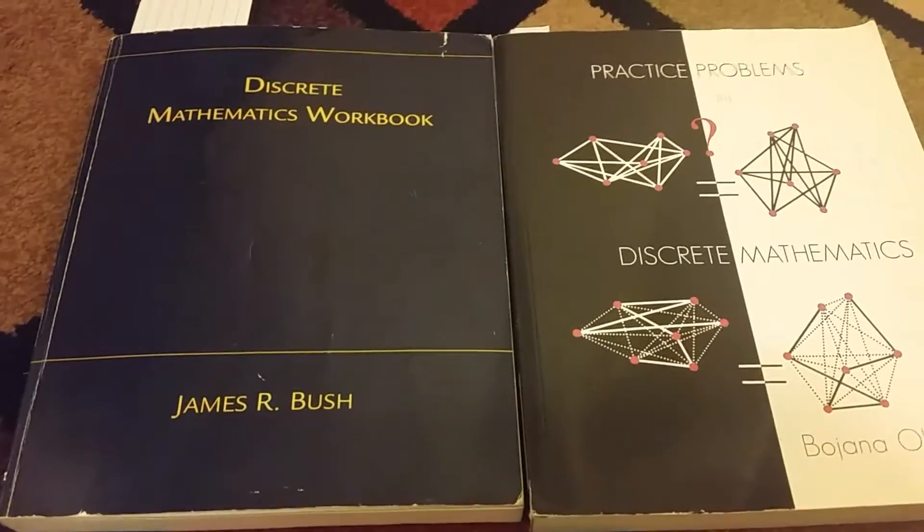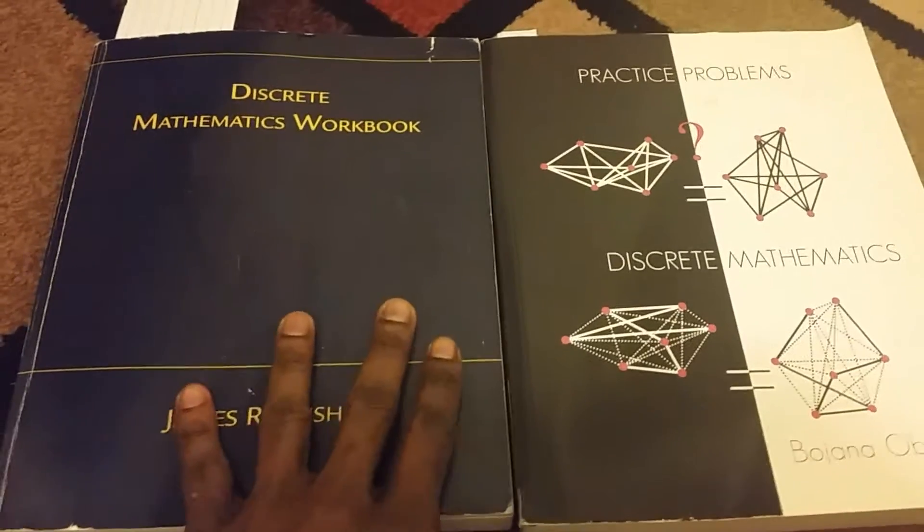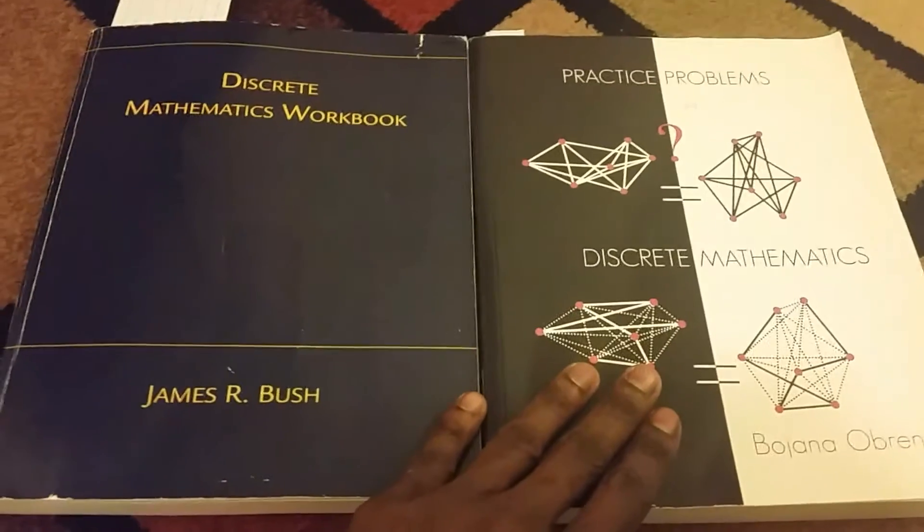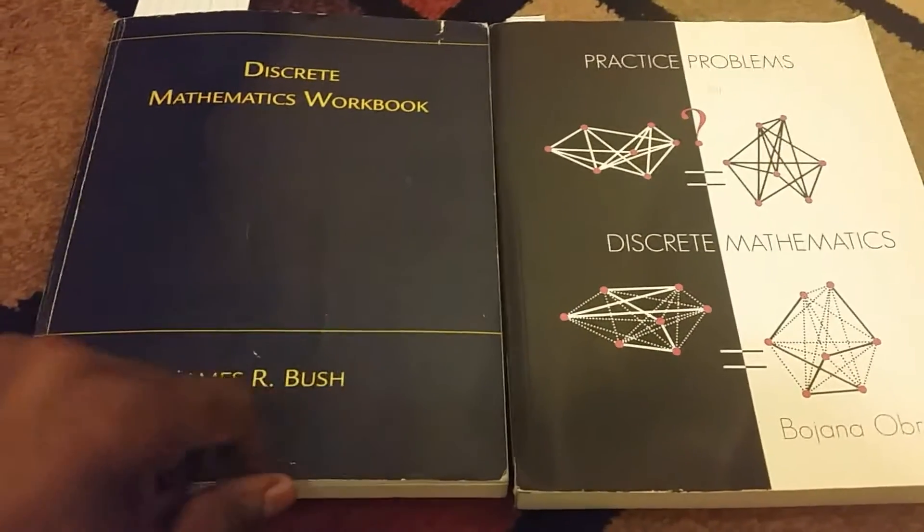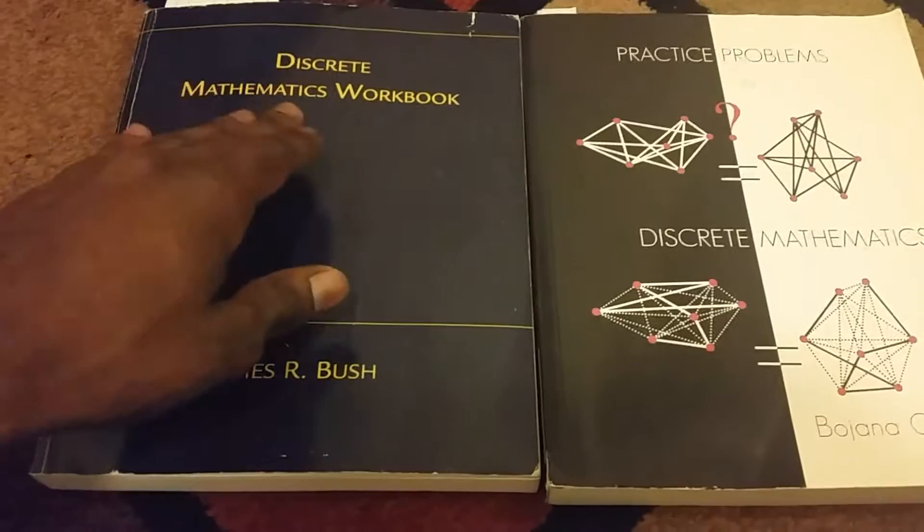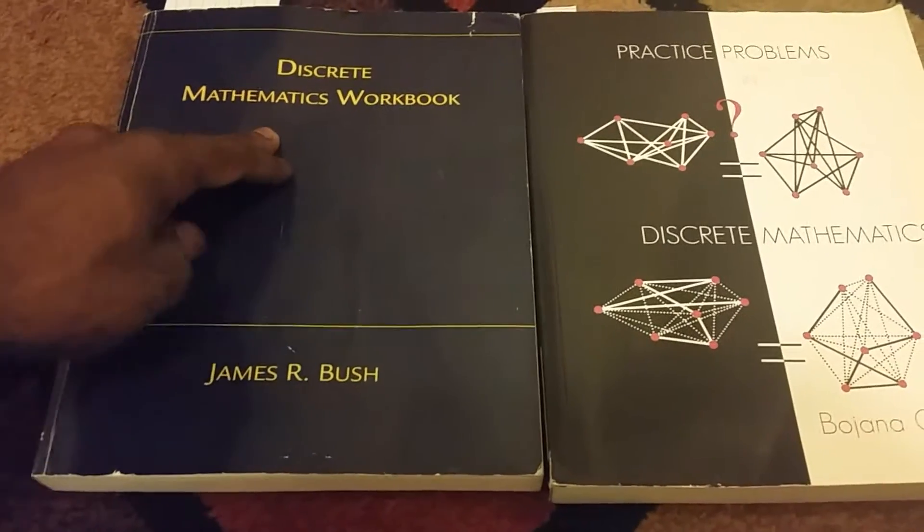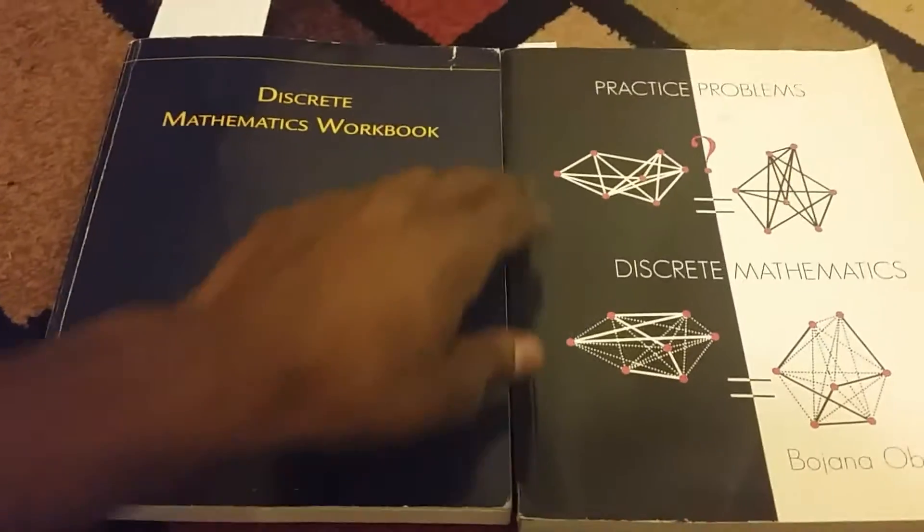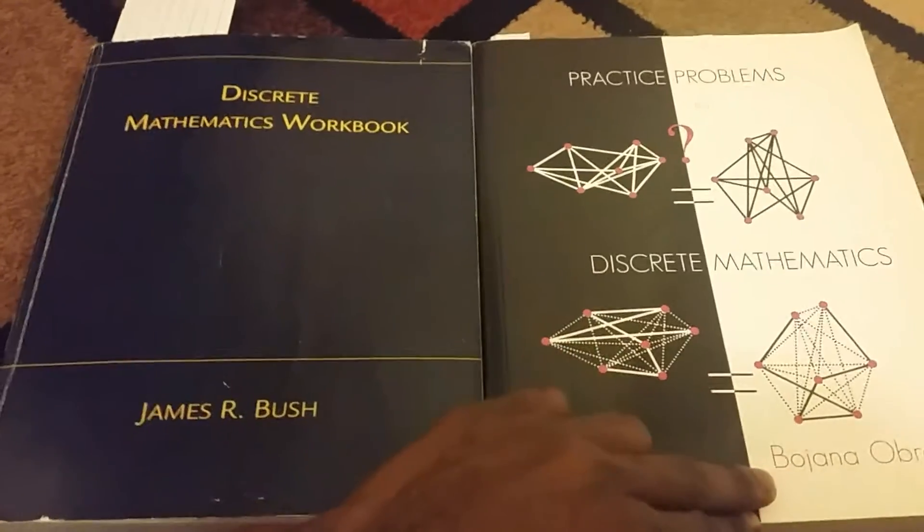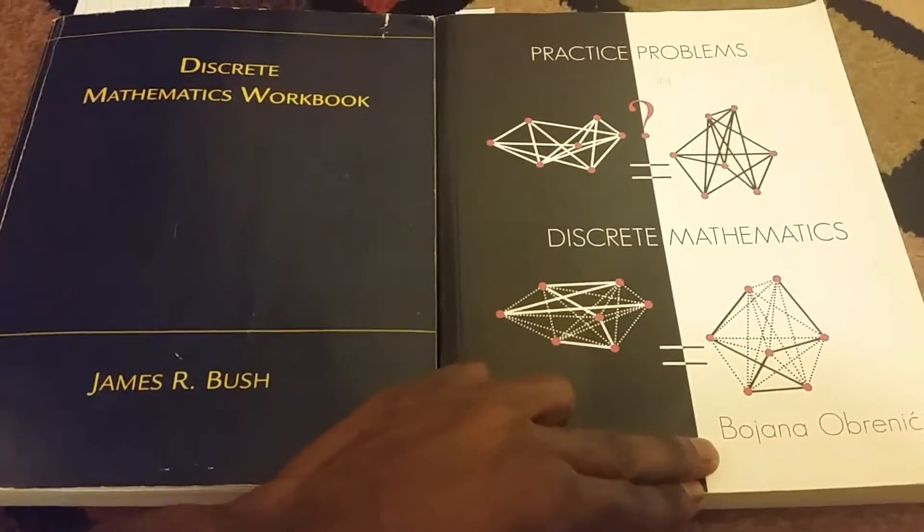And what I ended up doing was buying two books because the school book wasn't good enough for me, and I needed more practice. So the two books I bought are right here. One is called Discrete Mathematics Workbook by James R. Bush, and the other is called Practice Problems in Discrete Mathematics by Bojan O. Brennick.